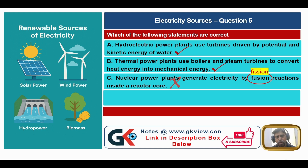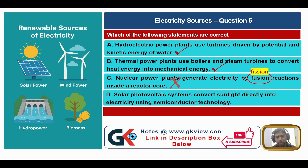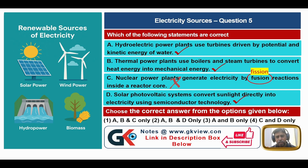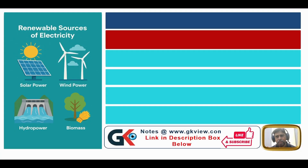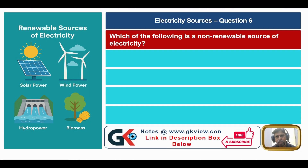Statement D — solar photovoltaic systems convert sunlight directly into electricity using semiconductor technology — is true. Therefore, option 2 is correct: A, B, and D only are correct statements. Question number six: which of the following is a non-renewable source of electricity? A) wind energy, B) geothermal energy, C) solar energy, D) natural gas.